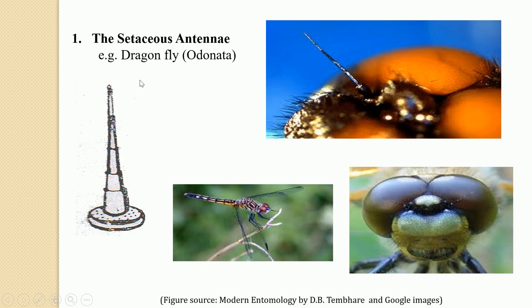Let us see them one by one. First of all, the setaceous antennae. In the setaceous antennae, the flagellum looks like a bristle due to the gradual reduction in size of the segments. If you see this diagram, the antennae are broadly categorized into three divisions: scape, pedicel, and flagellum.